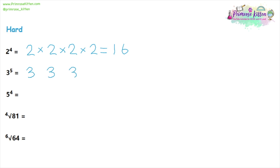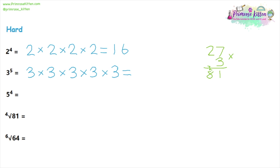Three to the power of five follows the same method — the little number tells you how many of the base number you're multiplying together. Work it out one step at a time: three times three is nine, nine times three is 27. Now I've done three of these with two more to go, so we move to written methods. 27 multiplied by three: units first, three times seven is 21, carry the two. Tens: three times two is six, plus two carried is eight. That gives 81.